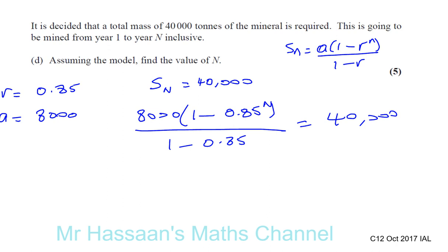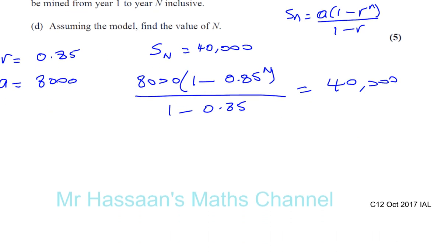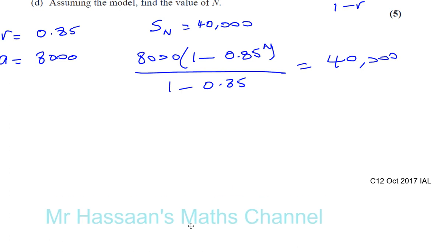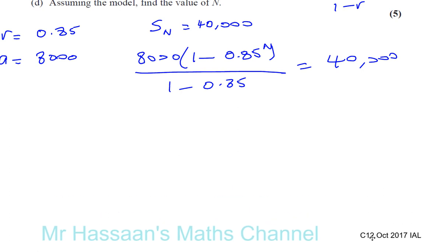Now we have to solve this equation. It's an exponential equation, so we're going to have to use logarithms. Let's start by multiplying both sides by 0.15. You end up with 1 minus 0.85 to the power of N equals 40,000 multiplied by 0.15 over 8,000.